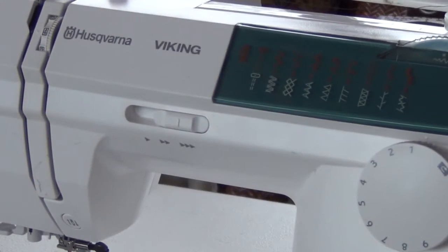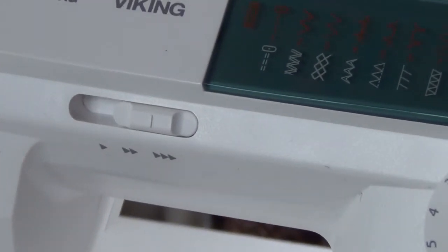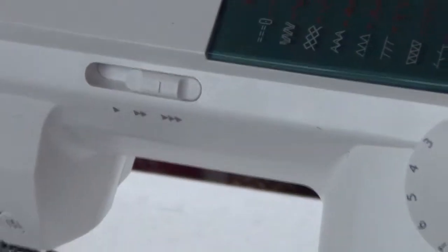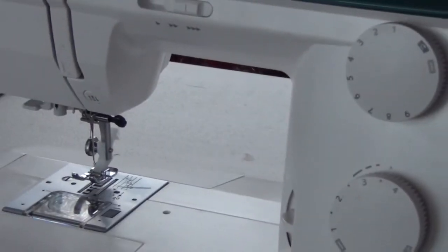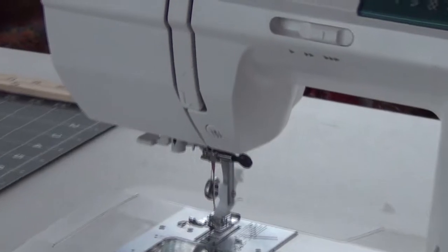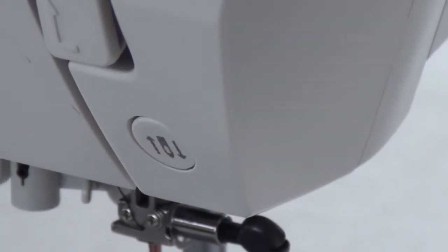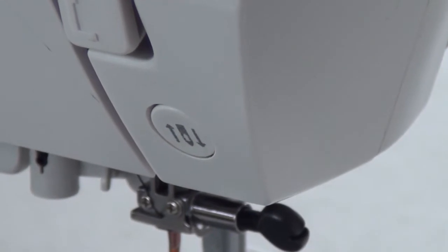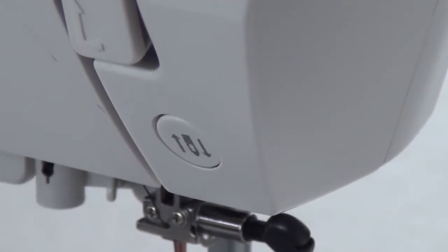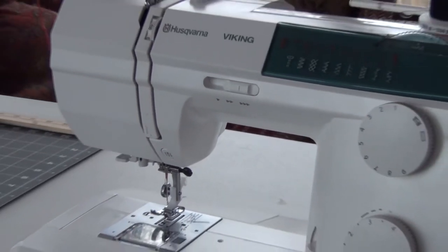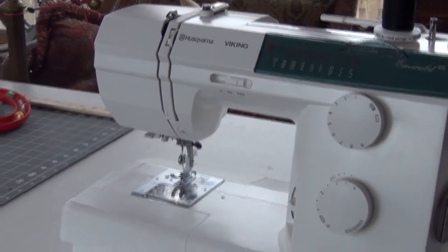It has a switch here which will allow you to adjust the maximum speed. It's called a motor speed control. And it also has a button right here, and if you depress that button, every time you take your pressure off the foot it'll put the needle in the down position. So in addition to this being a pretty strong machine with a variety of stitches, I really like it.